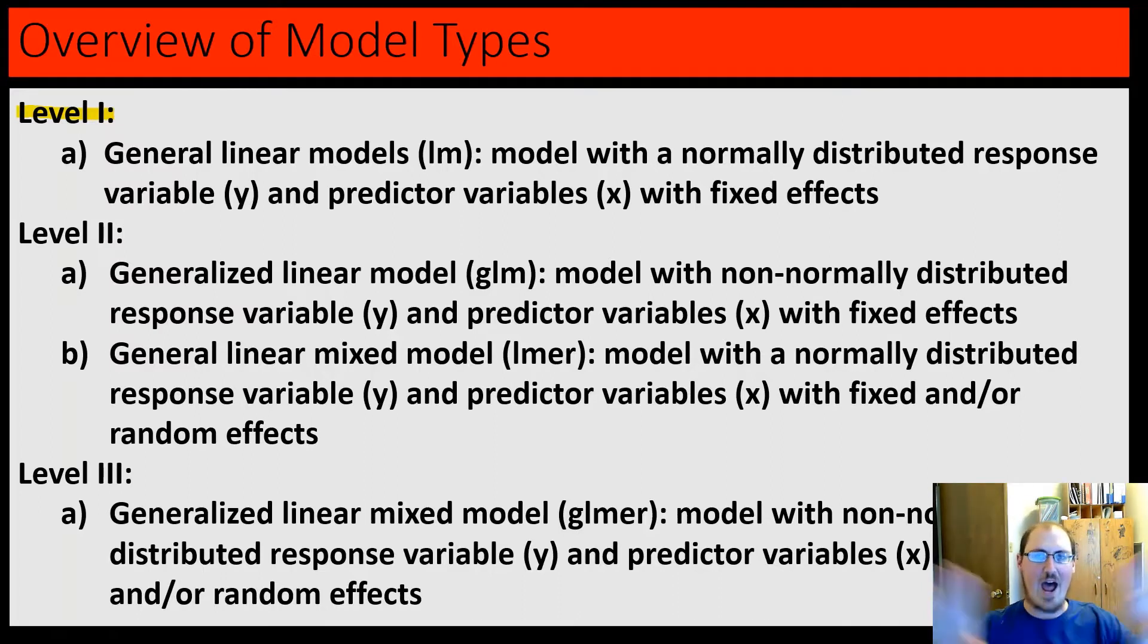At level 2, there's a path split. You have the Generalized Linear Model, or GLM on one side. That still only allows fixed effects, but the response variable can be non-normal, so logistic or Poisson regression falls within this model type. On the other path is the General Linear Mixed Model, or LMER, which requires a normal response variable, but allows fixed and random effects. See where we're going here.